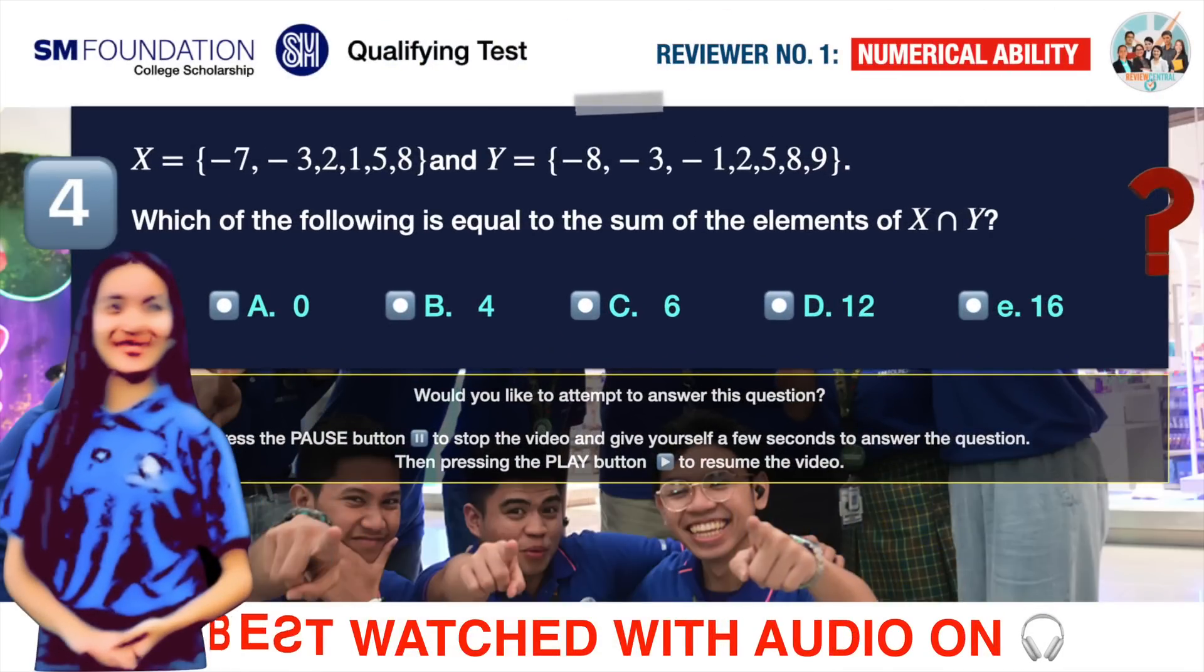Question number four. Given the two sets x and y as follows. x equals negative 7, negative 3, 2, 1, 5, and 8. And y equals negative 8, negative 3, negative 1, 2, 5, 8, and 9. Which of the following is equal to the sum of the elements of x intersect y? A. 0, B. 4, C. 6, D. 12, E. 16.